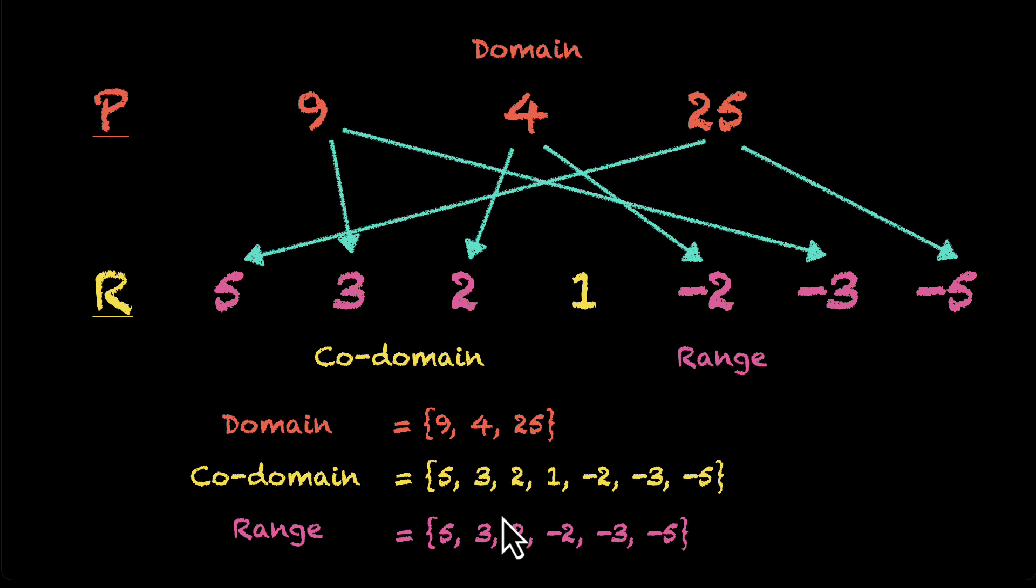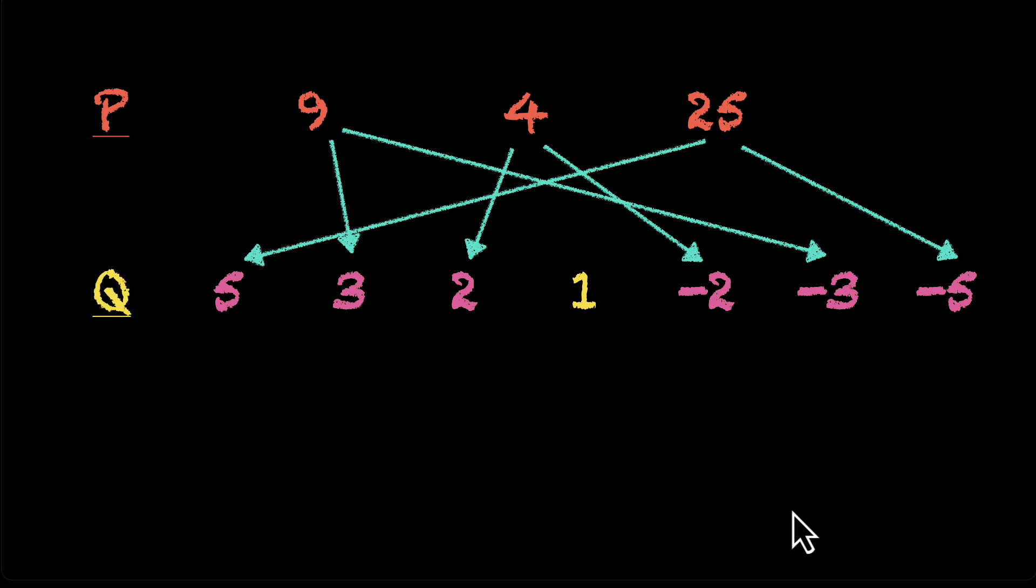How do we write this relation down? Let's first write this down in the roster form. For roster form, we need a set and we have ordered pairs inside it. How many do we need? 1, 2, 3, 4, 5, 6. So 6 ordered pairs.